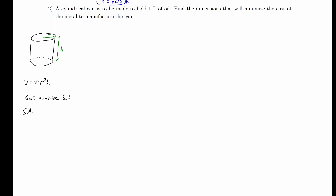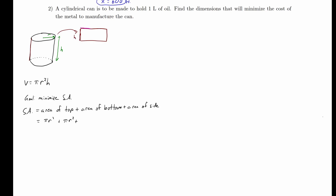To write a function for surface area, we break the can into different pieces: the area at the top, the area of the bottom, and the area of the side. The top of the can is a circle with radius r, so its area is pi r squared. Same thing with the bottom. The side of the can, if unrolled, becomes a rectangle whose height is the cylinder height and whose width is the circumference 2 pi r. So the area of the side is 2 pi r h.